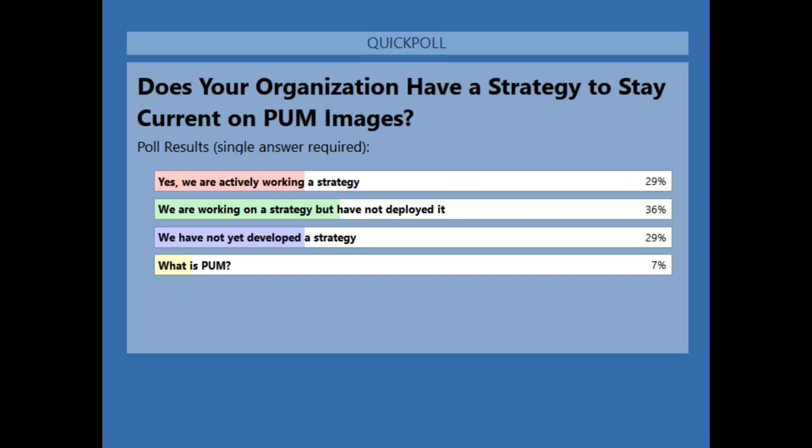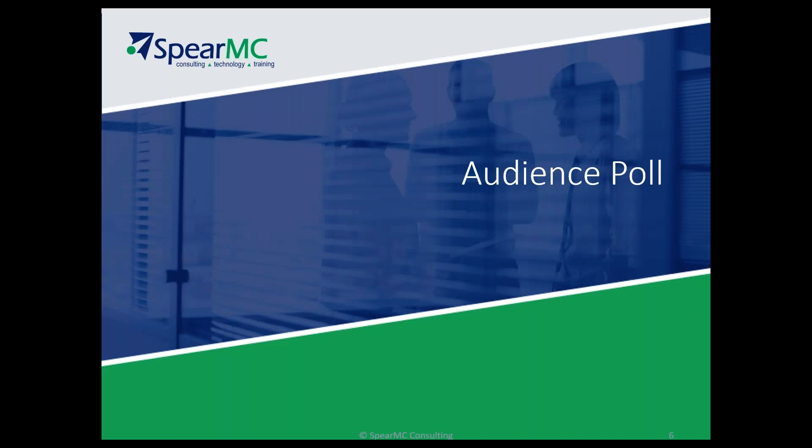Looking at the results, it's almost split — a third across the top three options. About a third are actively working on a strategy, some have a strategy but haven't deployed it yet, and a third don't have a strategy yet for staying current. Those in the last bucket may not be on 9.2 yet. This is good — we've got a good mix of folks in terms of where you are with your roadmap.